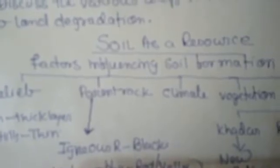Our next topic is soil as a resource. What is soil? Soil forms the topmost layer of Earth's crust. It is most indispensable for vegetation and it is a renewable natural resource. We will discuss about the factors influencing soil formation, such as relief, parent rock, climate, vegetation, and time.